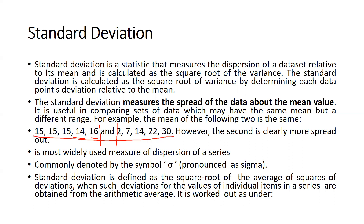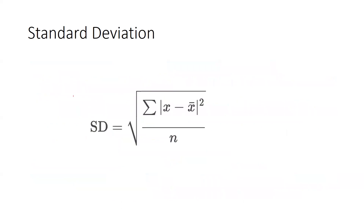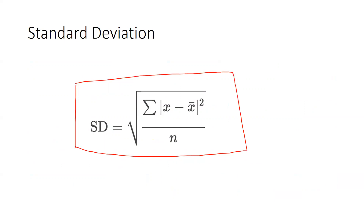Standard deviation is commonly denoted by the symbol sigma. It is defined as the square root of the average of the squares of deviations, where deviations of individual items in a series are obtained from the arithmetic average. The formula is: sigma equals the square root of the summation of (x minus x-bar) squared, divided by n.